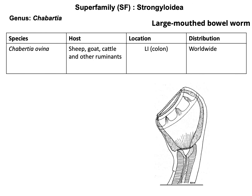Under the superfamily Strongyloidea, the genus is Chabertia. Under this genus, we are going to study one of the very important parasites of sheep, goat, cattle, and different other ruminants — that is Chabertia ovina. The location of this parasite is the large intestine, particularly the colon. The distribution is worldwide. This parasite is also known as the large-mouth bowel worm because the buccal capsule is very well developed.